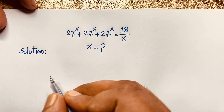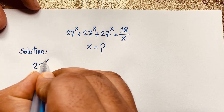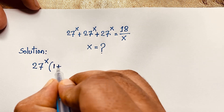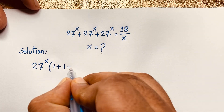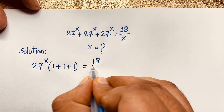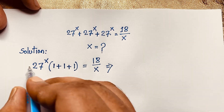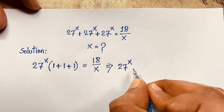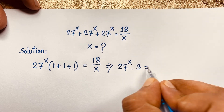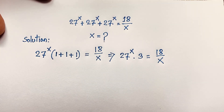First of all, you can see easily here that 27^x is common. So if we take 27^x as common and divide, each term becomes 1, giving us: 27^x times (1 + 1 + 1) = 18/x. So 27^x times 3 = 18/x.